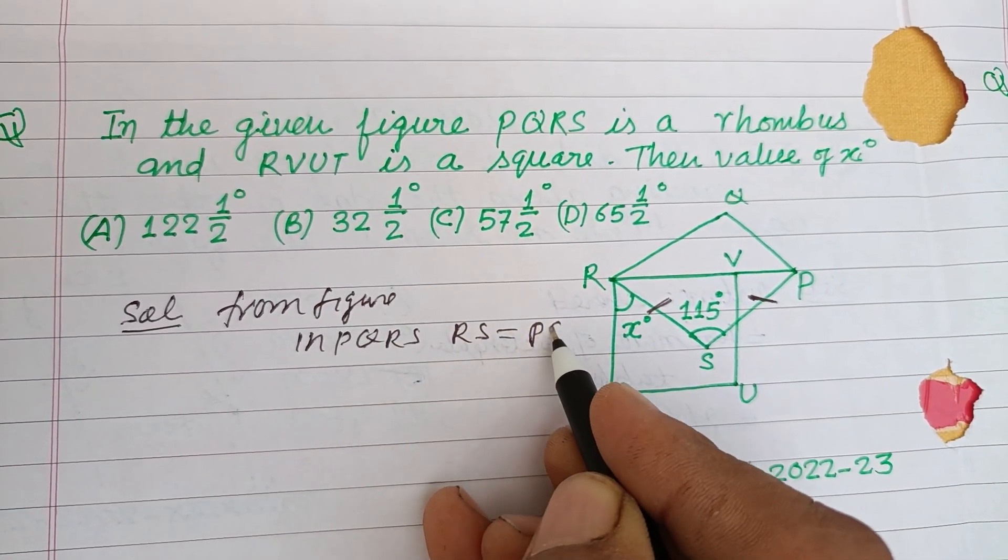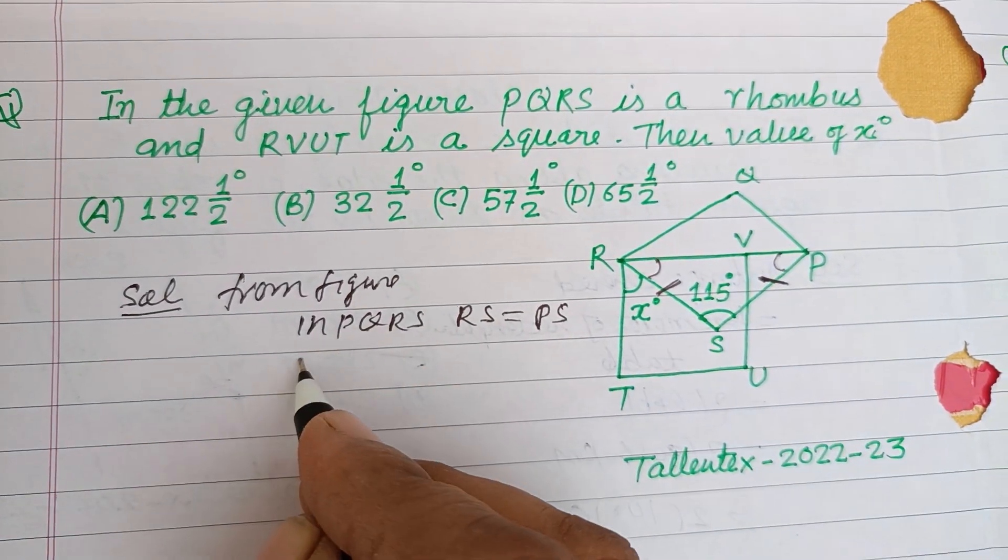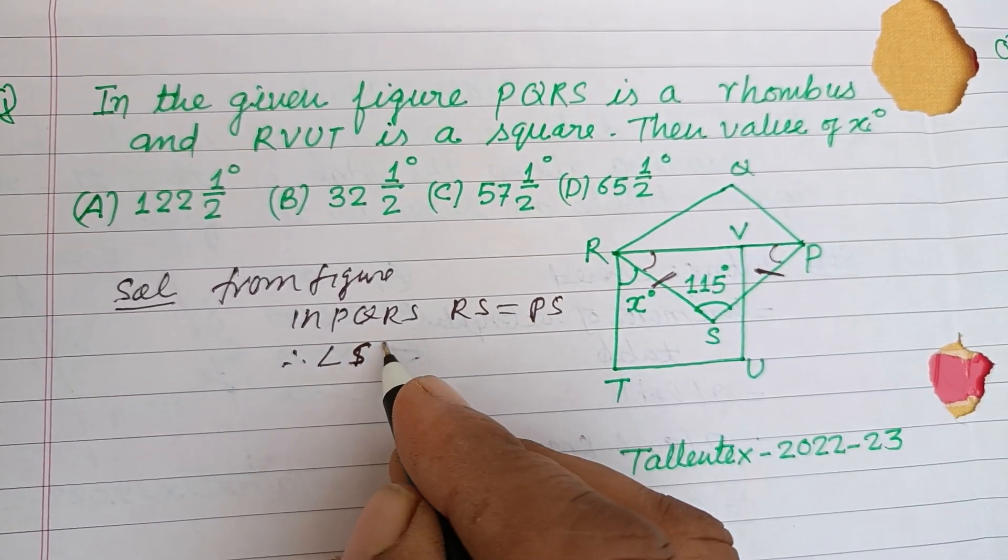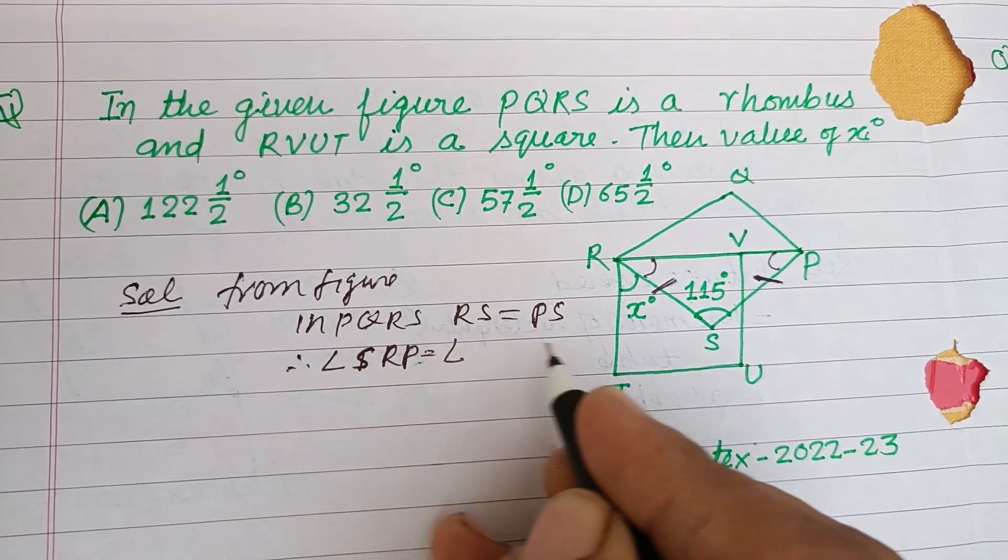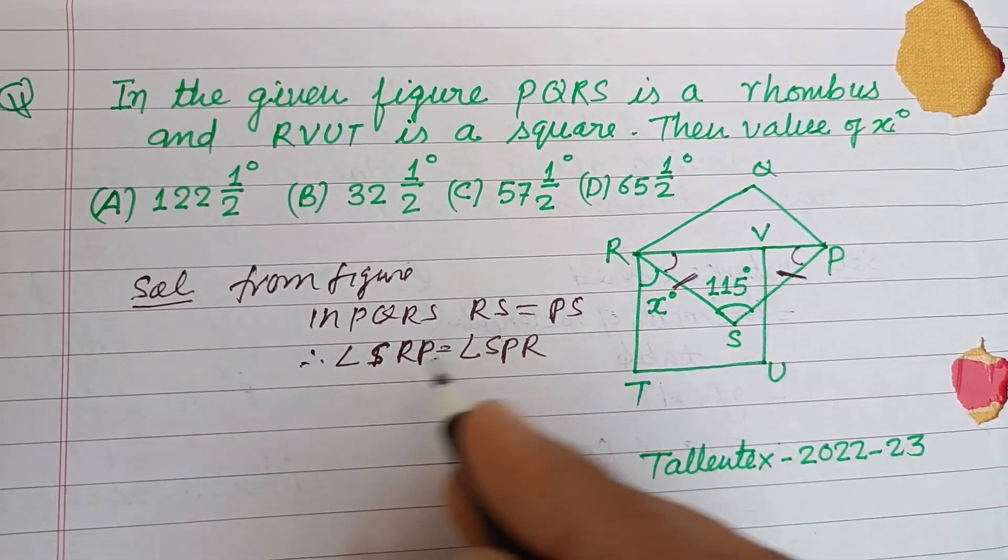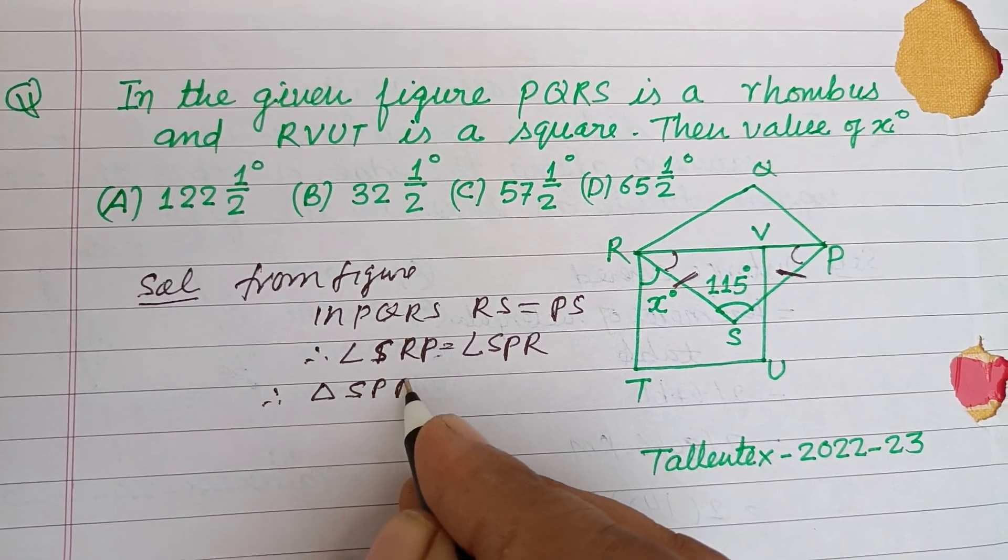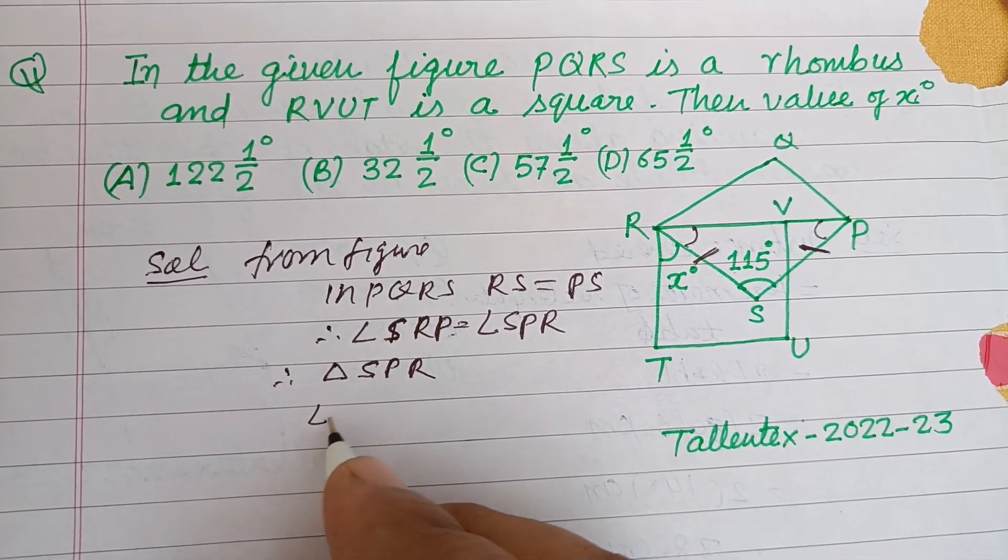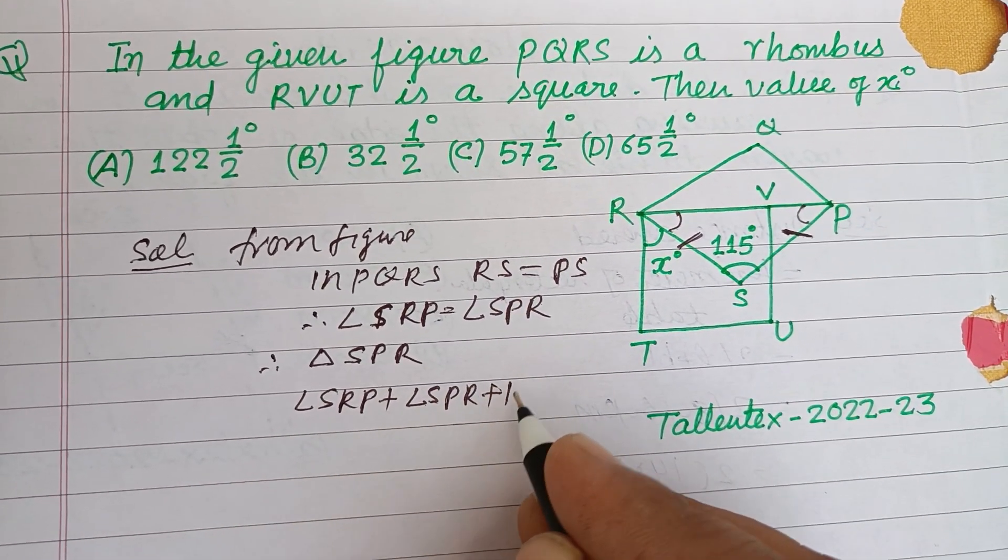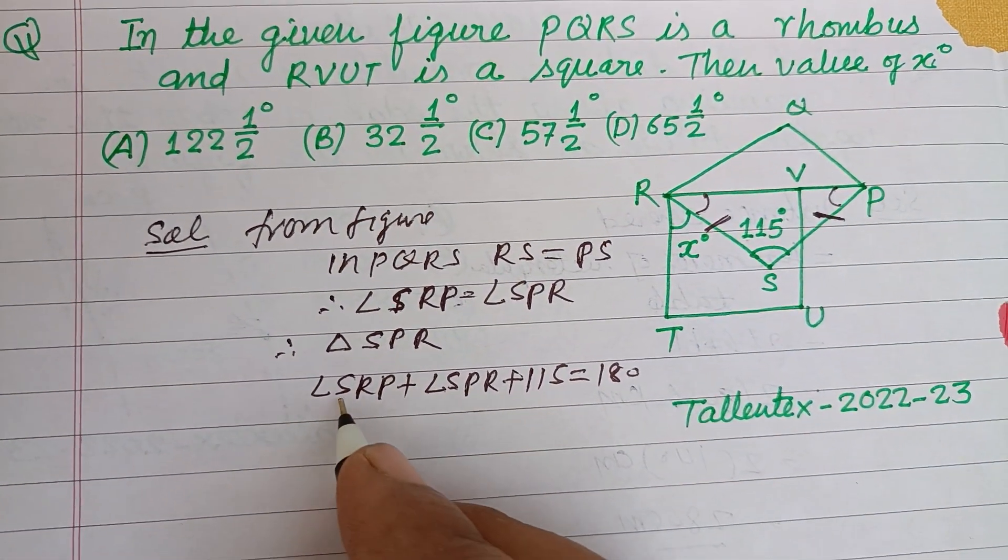RS equals PS, therefore these angles are also equal. Therefore, angle SRP equals angle SPR. In triangle SPR, angle SRP plus angle SPR plus 115 equals 180, using the angle sum property.